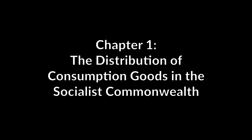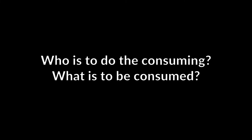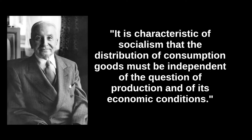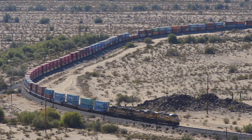Chapter 1: The distribution of consumption goods in the socialist commonwealth. In this chapter, Mises correctly identifies that who is to do the consuming and what is to be consumed by each is the crux of the problem of socialist distribution. These two problems correspond to the remuneration problem and measuring and predicting demand. Quote: 'It is characteristic of socialism that the distribution of consumption goods must be independent of the question of production and of its economic conditions.' End quote. This statement is wrong, partly because distribution of both final and intermediate goods happens on the same transportation network.